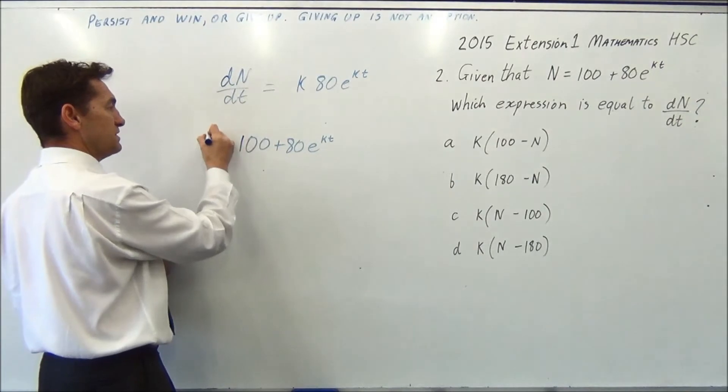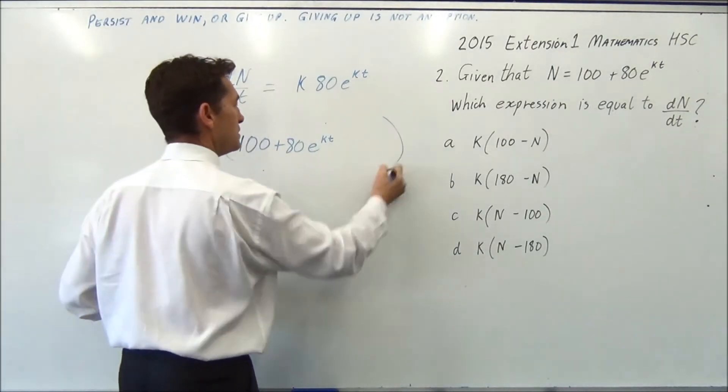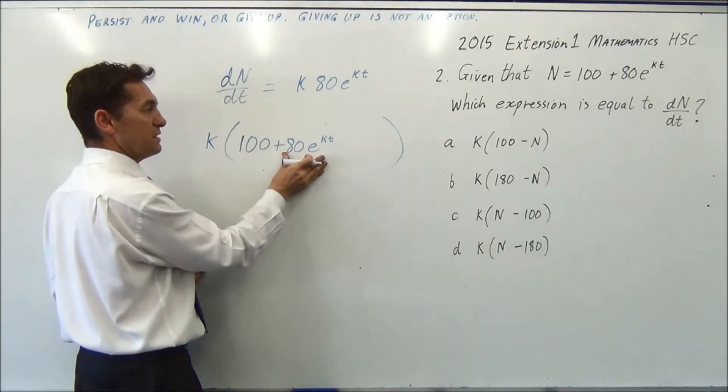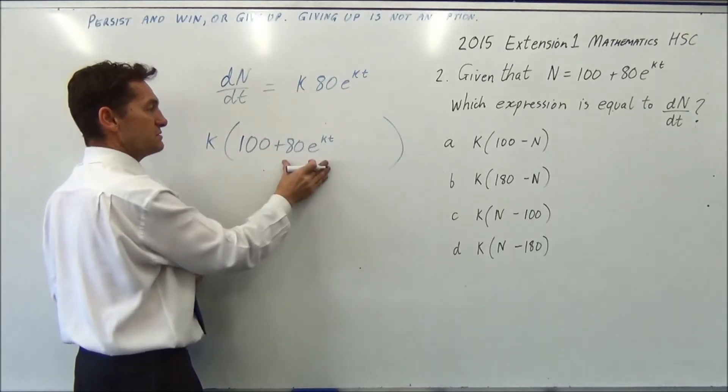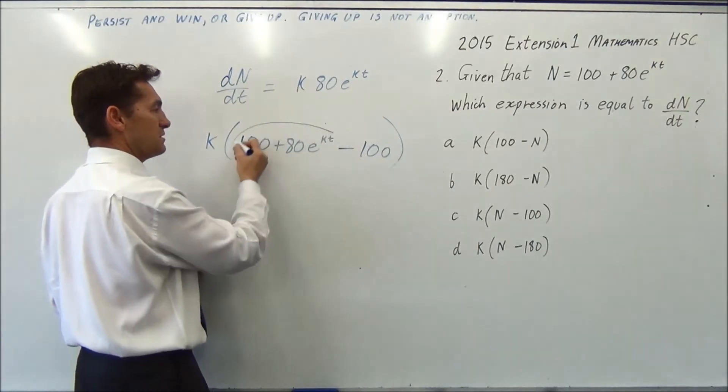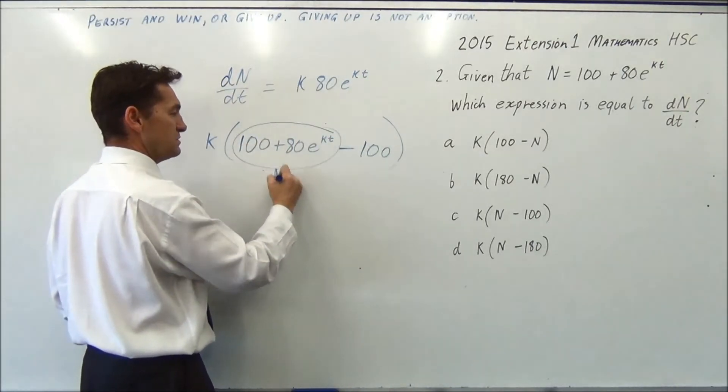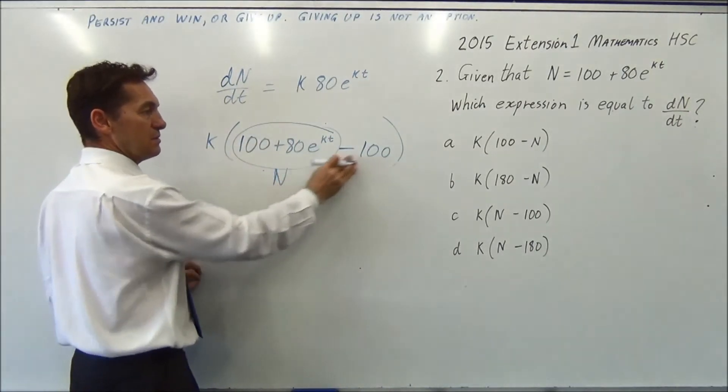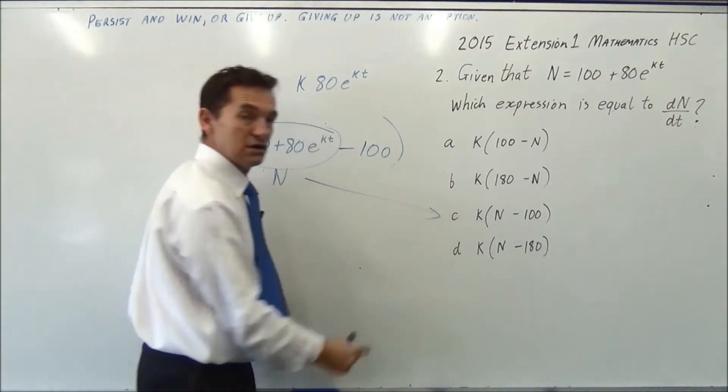So if you put that in and multiply that by k, we only want this part because that's our answer. So you've got an extra 100, so you're going to minus 100, and then this bit is your n. So you've got k n minus 100, which is c.